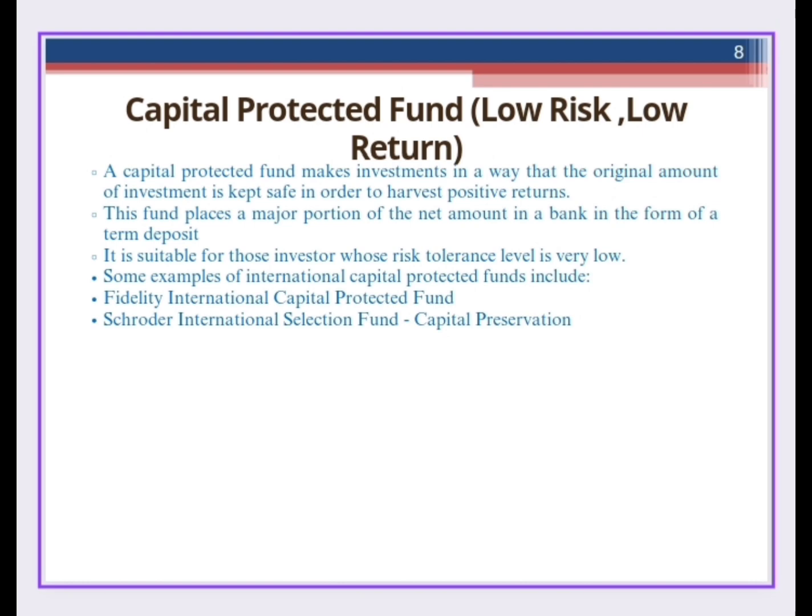What is capital protected fund? Capital protected fund is a fund in which an investor's original amount of investment is kept safe, and in addition they will also get a positive return. This fund makes major investments in bank deposits. It is suitable for those investors who cannot bear any risk and whose risk tolerance level is very low. It is a good option compared to bank deposits because in a bank deposit you have to keep money for a long period, but in a mutual fund you can withdraw easily at any time. Examples include Fidelity International Capital Protected Fund and Shorters International Selection Fund Capital Preservation.